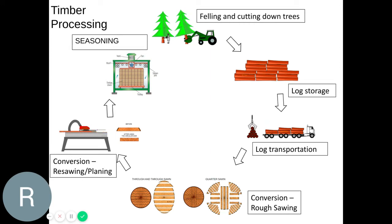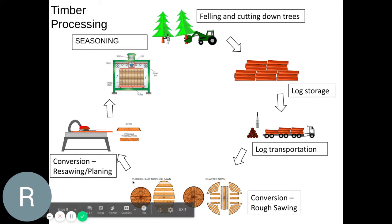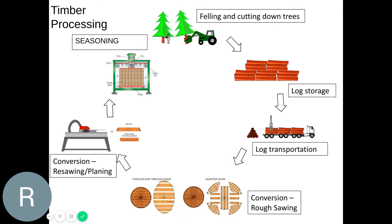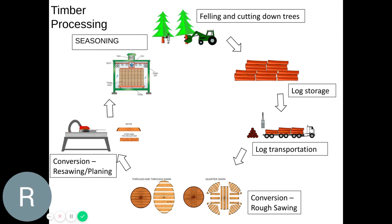Rough sawing gets the timber into roughly similar flat planks. The most common methods are through-and-through sawing and quarter sawing. This produces roughly the same size timber planks, but they still have angles from the curve of the log and aren't all the same thickness — it's very rough. So then they go through a re-sawing or planing process. The planing process squares up all of the edges to create 90-degree angles and ensures that all of the plank thicknesses are the same, so all planks of wood are identical.